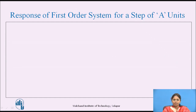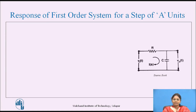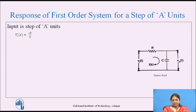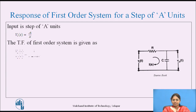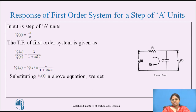Let's see the response of the first order system for a step of 'a' units. Again consider the first order system which consists of a resistor and capacitor on the input side and a capacitor on the output side. The input applied is a step of 'a' units. The Laplace transform of the step of 'a' units is given as V_I(s) = a/s. The transfer function is V_O(s)/V_I(s) = 1/(1 + s·RC). This is rewritten as V_O(s) = V_I(s) · 1/(1 + s·RC). Substituting V_I(s) = a/s, we get V_O(s) = a / [s·(1 + s·RC)].